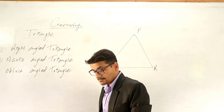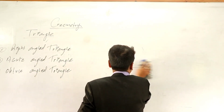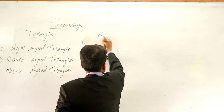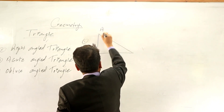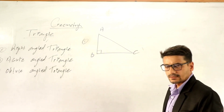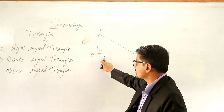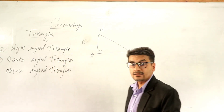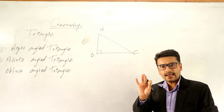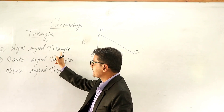Right angle triangle means if one angle of a triangle is 90 degrees — that is, a right angle. Suppose this figure: A, B, C — and here a 90 degree angle is formed. If so, then we say this is a right angled triangle. Among the three angles, any one angle must be a right angle; in that condition that triangle is called a right angled triangle.